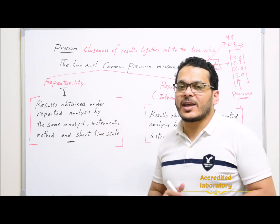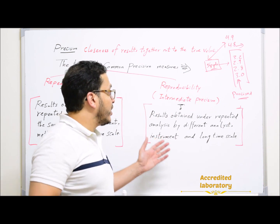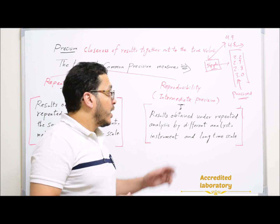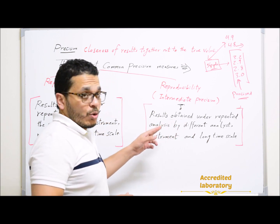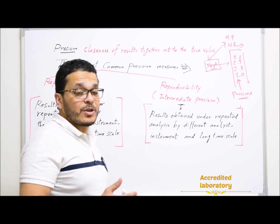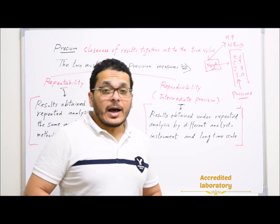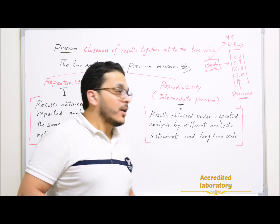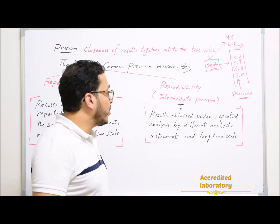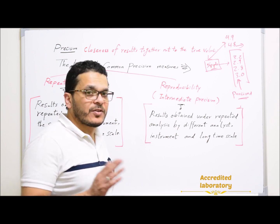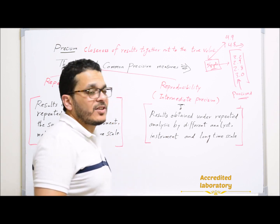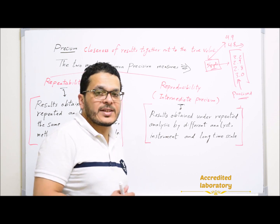Repeatability uses a short time scale. But in the case of reproducibility — or intermediate precision — results are obtained by repeated analysis, but by different analysts, different instruments, maybe a different method, and over a long time scale. Now you may ask: how can I achieve this performance parameter — reproducibility — if I don't have a different analyst or different instrument?